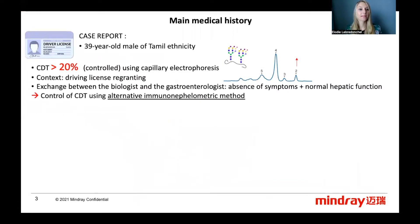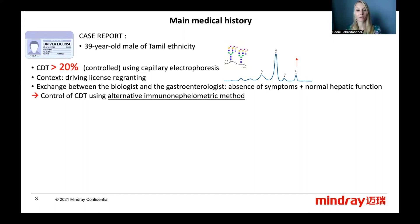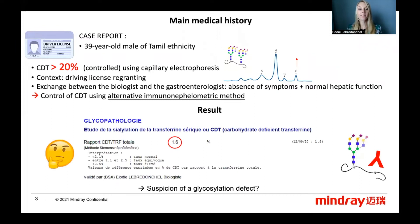We report the case of a 39-year-old male of Tamil ethnicity. A CDT value over 20% using capillary electrophoresis was measured in the context of a driving license re-grant. An exchange between the biologist and the gastroenterologist revealed the absence of symptoms and a normal hepatic function, so a control of CDT using an alternative immunonephelometric method was decided. Surprisingly, the value was this time normal, under 2% with this method in our laboratory, and it was controlled twice.